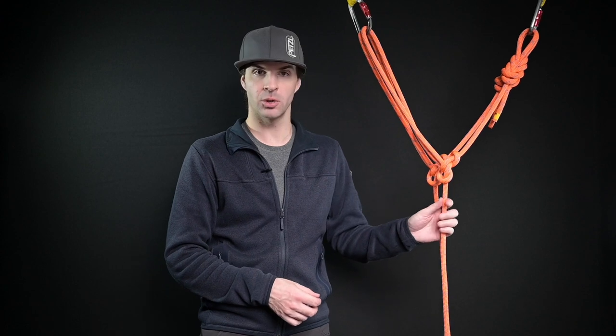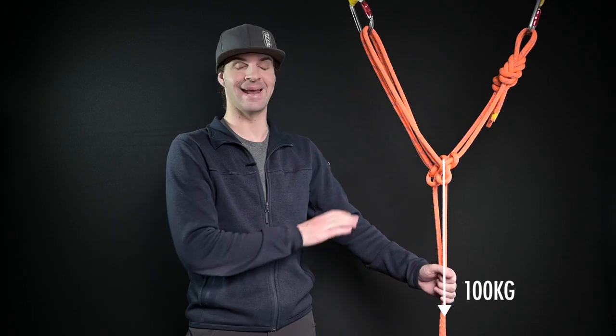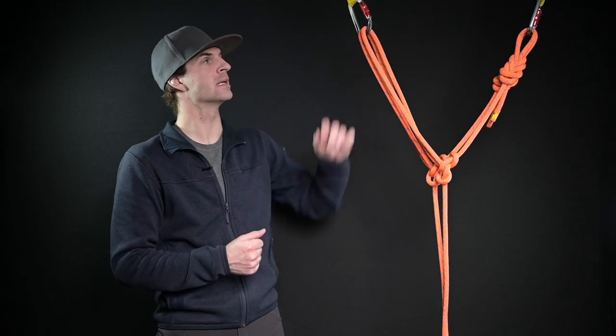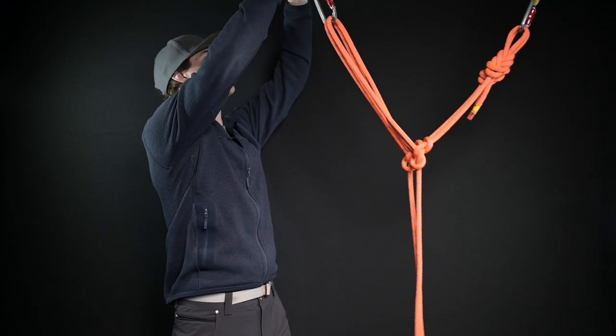So why do we want to understand angles? Well ultimately if we're putting weight here we want to understand how much weight we're putting on each of these carabiners. We want to make sure that our equipment can handle the anticipated load on the system. So at 90 degrees, say I have a hundred kilograms right here. At 90 degrees of internal angle I will apply approximately 70 percent on each of these bolts or on each of these carabiners.